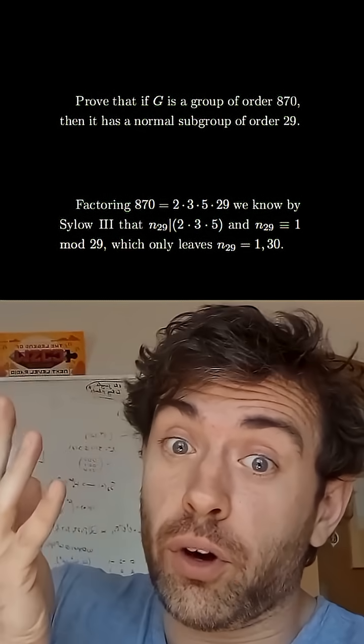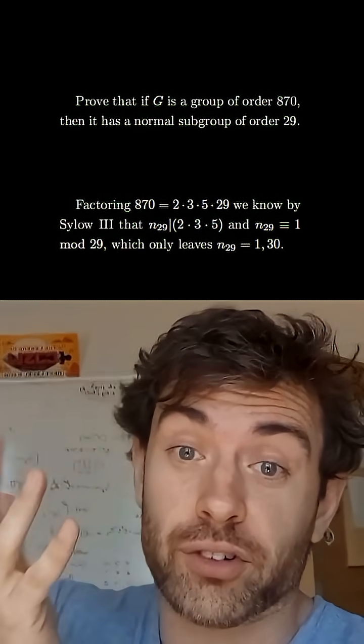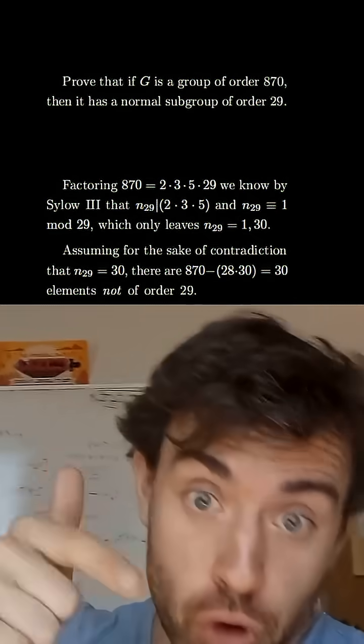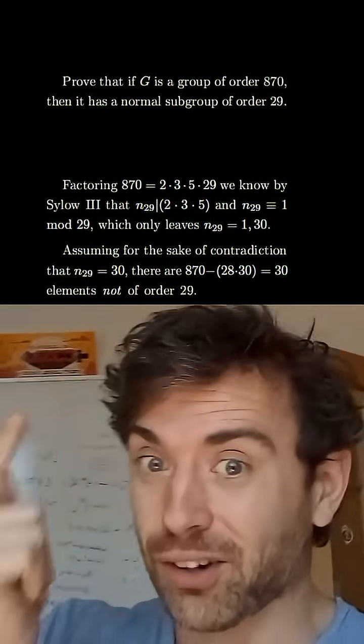So if it was 1 we know since all Sylow subgroups are conjugate that that would force it to be normal, so we just have to rule out the case of 30. So let's assume that for the sake of obtaining a contradiction.